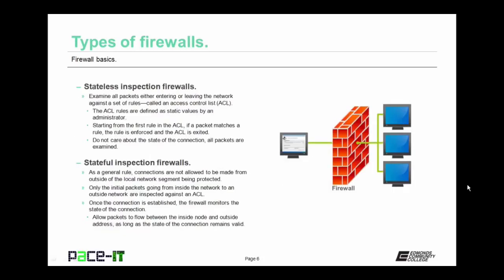There are stateless inspection firewalls — these examine all packets either entering or leaving the network against a set of rules called an access control list, or ACL. The ACL rules are defined as static values by an administrator. All packets are examined against the rules in the ACL starting with the first rule. If a packet matches a rule, that rule is enforced and the ACL is exited. Stateless inspection firewalls do not care about the state of the connection — they only care about the packets, and all packets are examined.